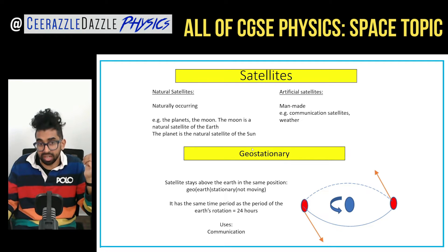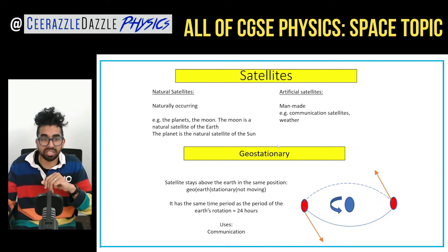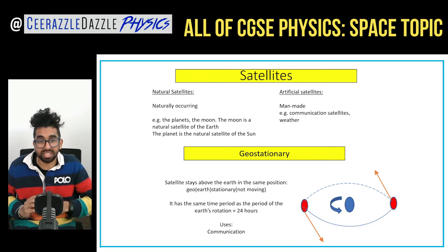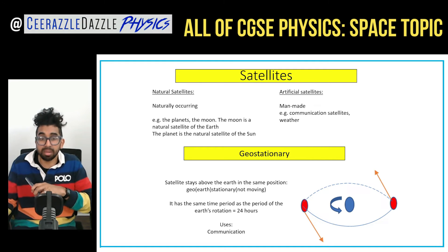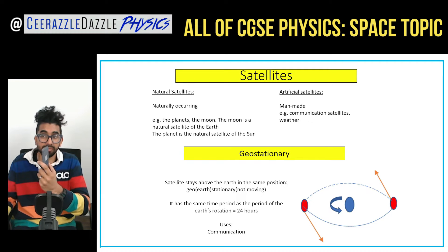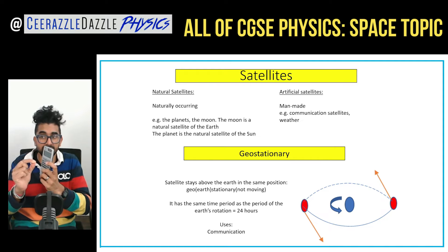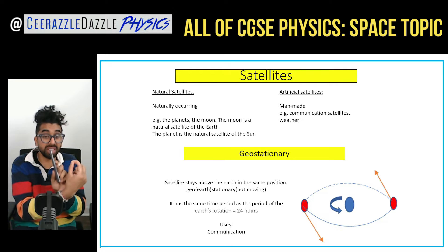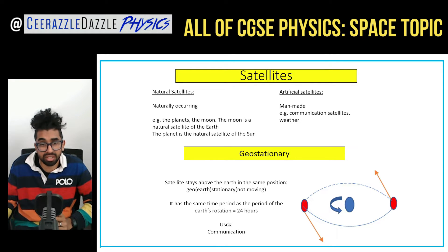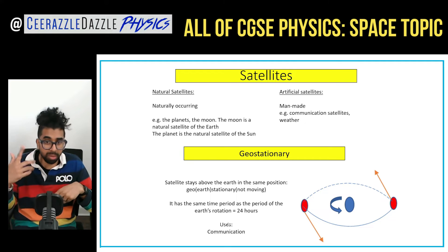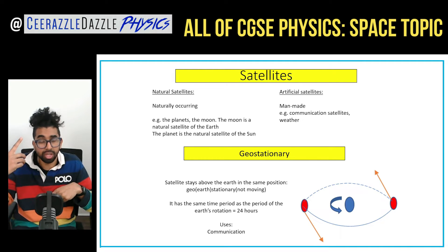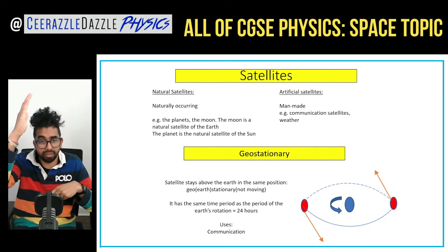Geostationary — the key is in the wording. Geo means the Earth, stationary means not moving. Geostationary satellites stay above the Earth in the same position. They have the same time period as the Earth's rotation, so they rotate with the Earth. As the Earth rotates, the satellite stays in the same position above the Earth. They are used in communication satellites — for example, for mobile phones you always want the satellite directly above you in the same position.